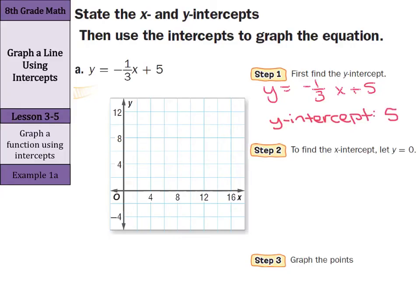Now, to find the x-intercept, it's a little bit trickier. We need to let y equal 0. So we have our equation y equals negative 1 third x plus 5. We're going to let y equals 0. So we'll put in a 0 for y equals negative 1 third x plus 5.